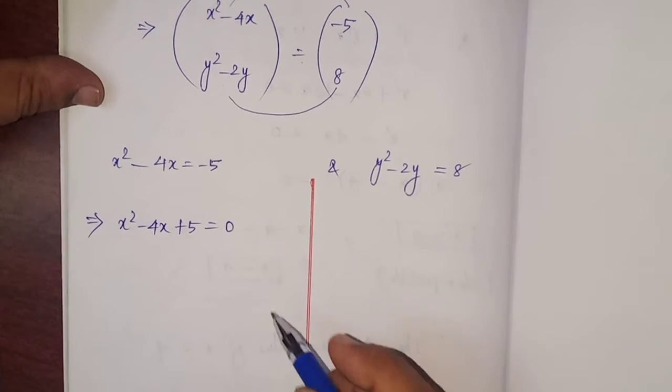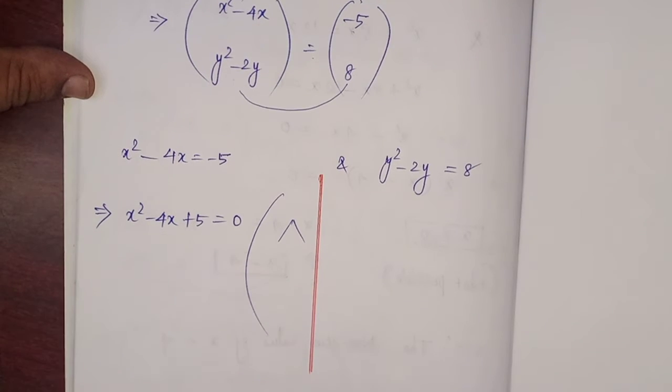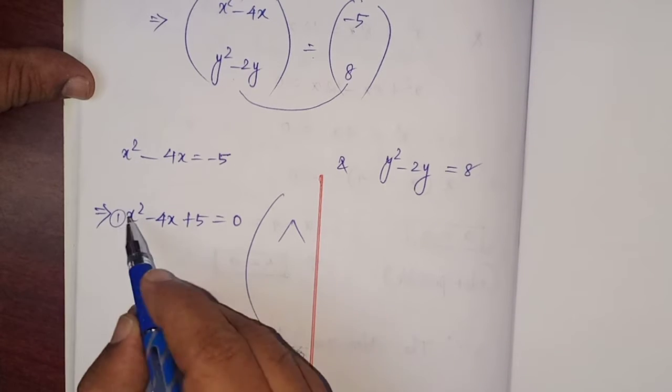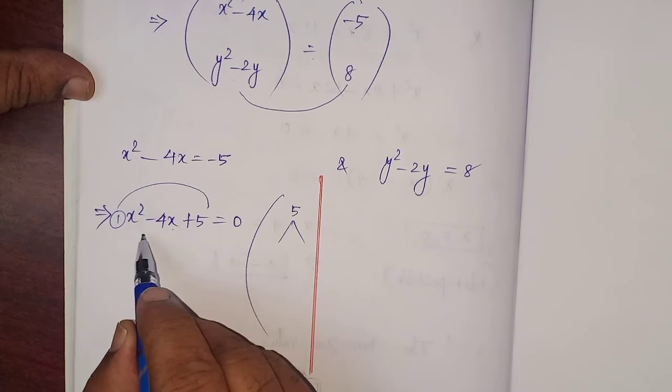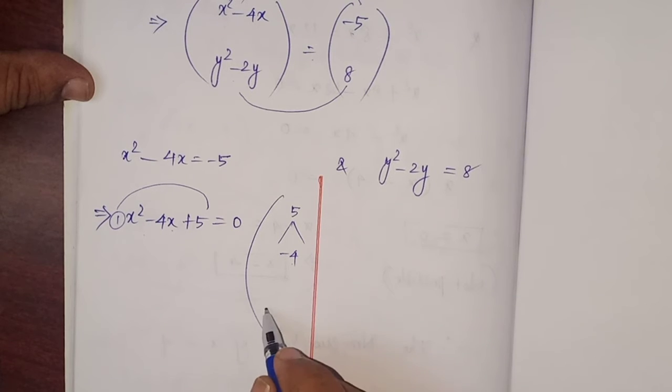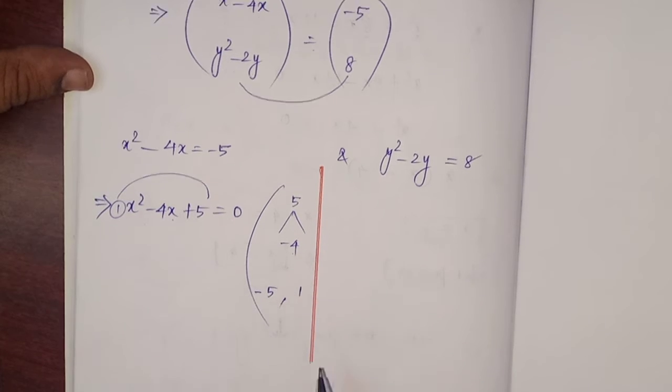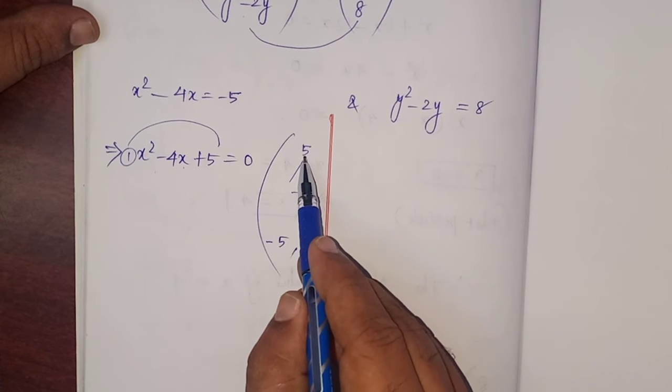We have to factorize. The coefficient of x squared equals 1, 1 into 5, that is equal to 5. The coefficient of x, that is equal to minus 4. Product 5, sum minus 4. That is 5 and 1. We have to introduce minus 4, the greater number. Minus 5 plus 1, that is equal to minus 4. Multiply these 2, we are getting 5.